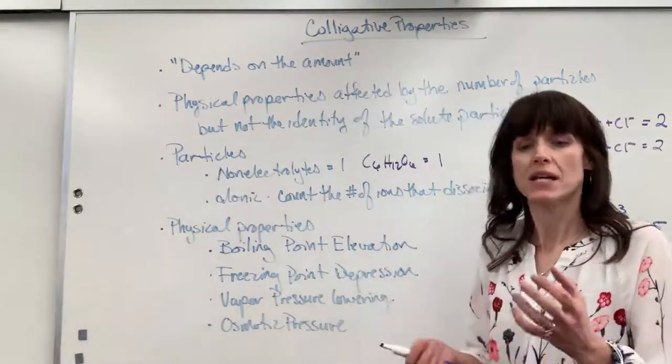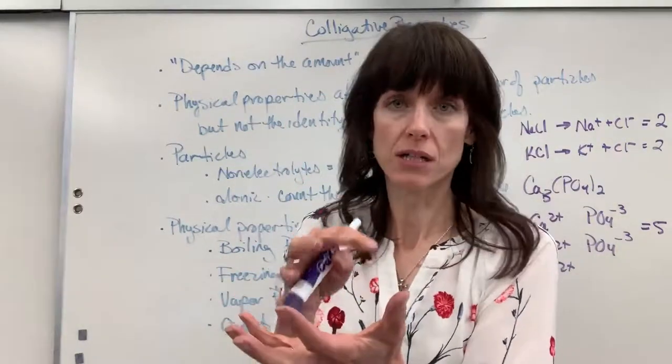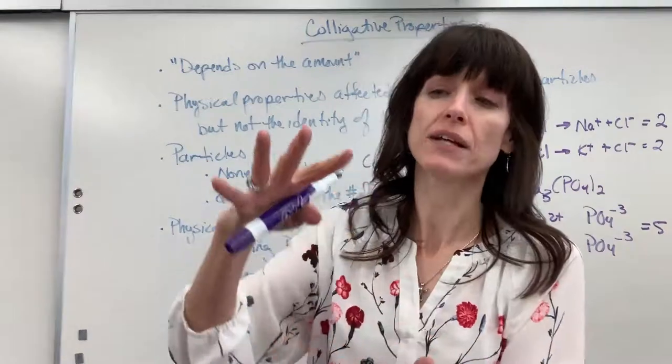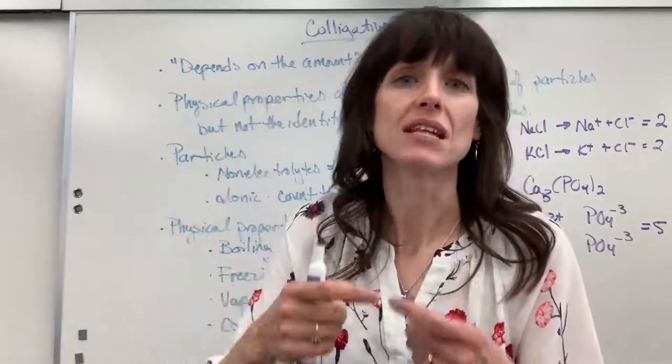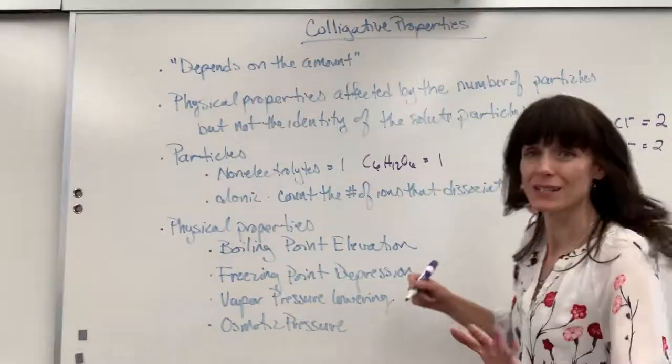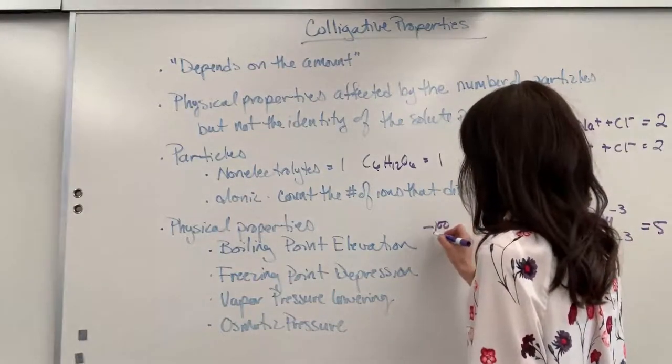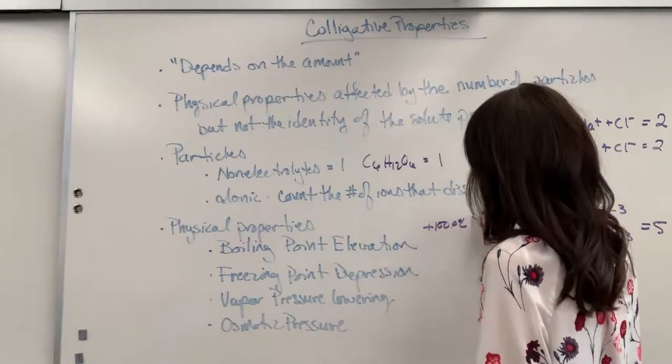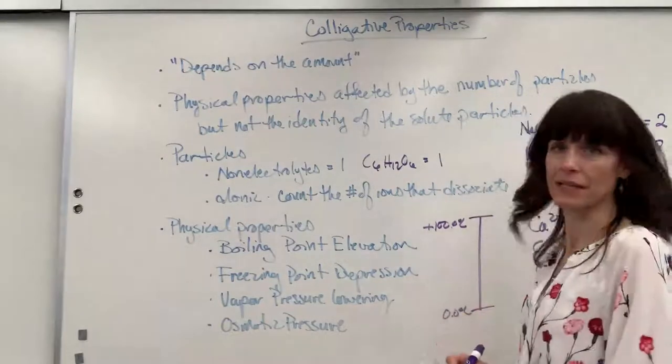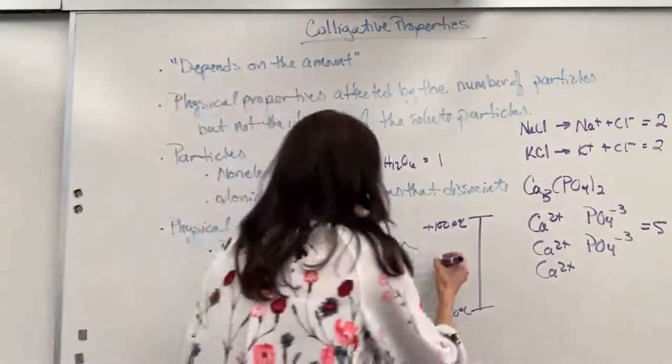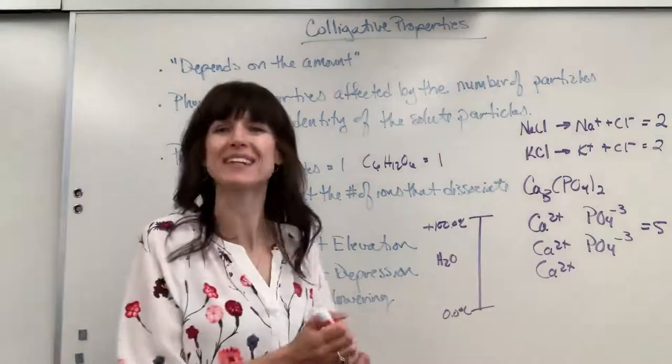In a nutshell, what happens is when you take a pure solvent, dissolve anything in it, put any solute into it, it's going to stretch the range that that particular solvent, the now solution, will stay in the liquid phase. Let me show you this. So we're going to use water as our example. You know that water boils at 100 degrees C. So I'm going to do a line right here, and then you know that water freezes at 0 degrees C. Okay, so that's pure water. This is going to be H2O.